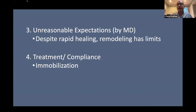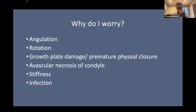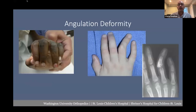Many kids will not tolerate a simple splint, so casting needs to be used more frequently. Why do I worry? I worry about angulation, rotation, growth plate damage, avascular necrosis — probably my biggest worry — stiffness, infection, et cetera. Angulation can be subtle or not so subtle. Our goal when assessing these children is to do the assessment in a timely fashion. If the child is significantly swollen, bring them back a week later, cast them, and reassess.